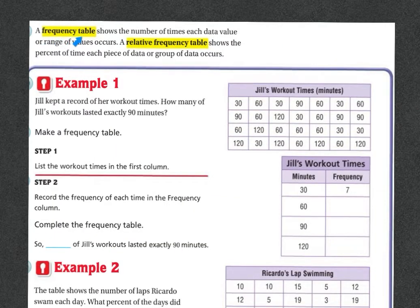Frequency table. A frequency table shows the number of times that each data value or range of value occurs. A relative frequency table shows percent of time each piece of data or group of data occurs. Example 1: Jill kept a record of her workout times. How many of Jill's workouts lasted 90 minutes? So let's make a frequency table. So here's her workout times. Notice that it's in minutes.